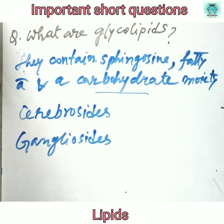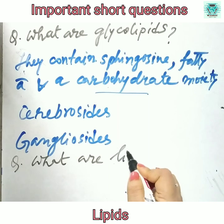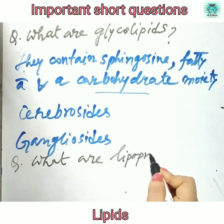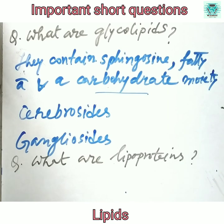Moving to lipoproteins: what are lipoproteins? These are formed by a combination of components — triacylglycerol at 45%, phospholipids at 35%, and cholesterol and cholesterol ester.